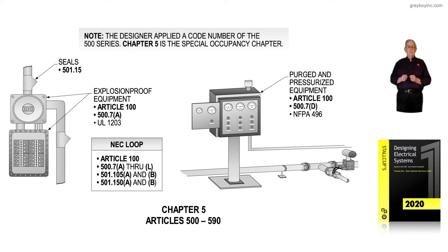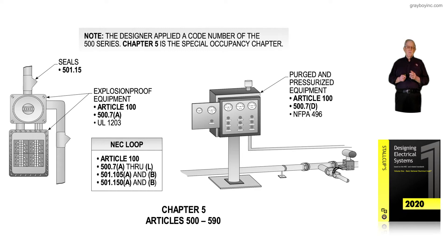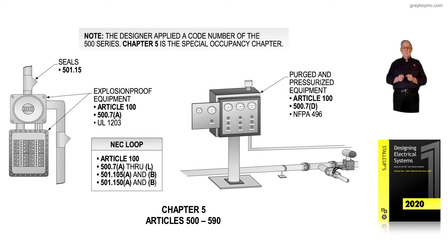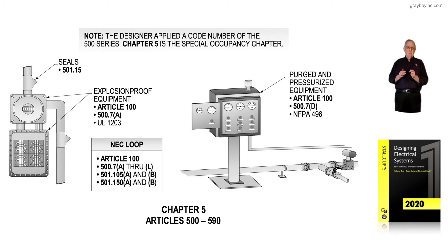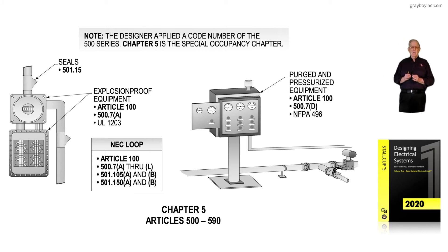The NEC notes that 500.2 will no longer contain definitions — it's Article 100 Part 3 now. The definitions were moved and scattered through Article 100, and designers in hazardous locations, as well as electricians and inspectors, really didn't like that. They said the definitions were harder to find. So they provided a Part 3 and put all the definitions there in alphabetical order, making them easier to find, like they used to be in 500.2. So 500.7A through L deals with the protection techniques allowed in classified locations.